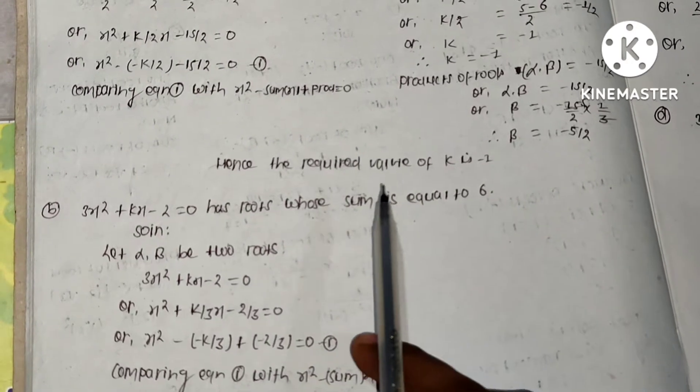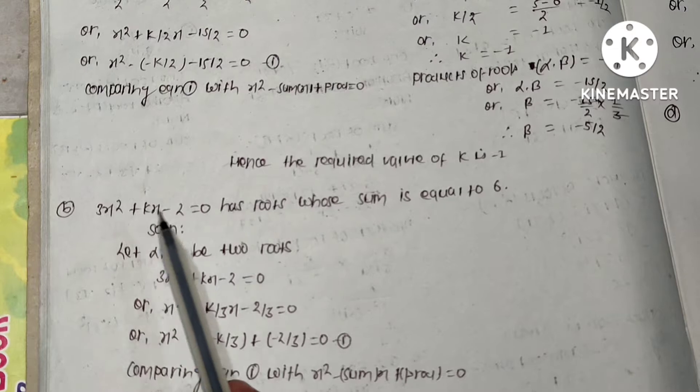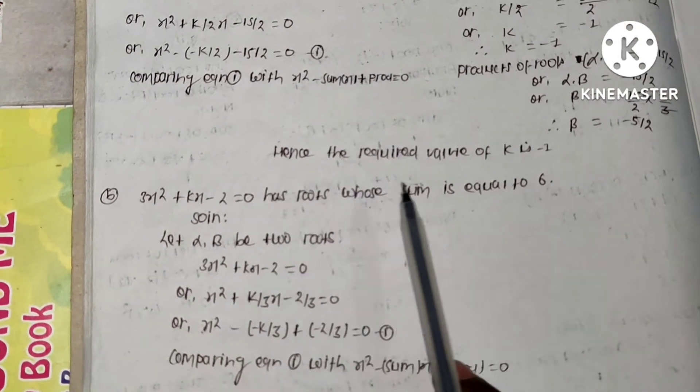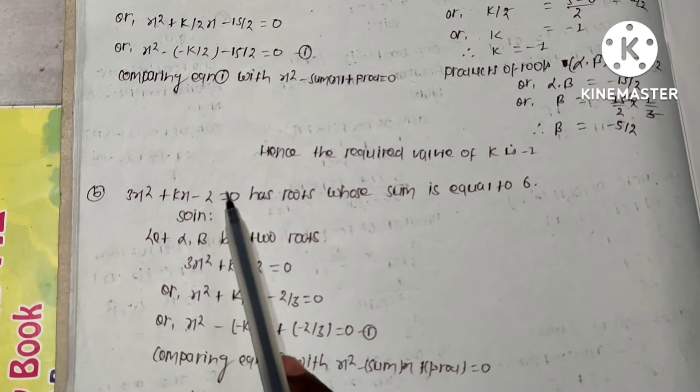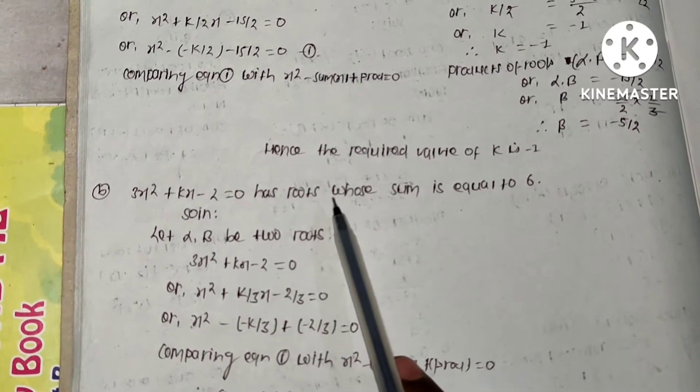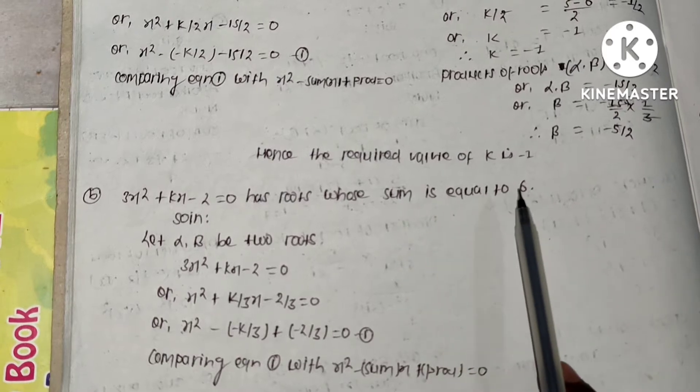Hi everyone, in this video we will solve problem number 3x² + kx - 2 = 0 which has roots whose sum is equal to 6. So here we have given an equation with roots alpha and beta, and their sum is equal to 6.